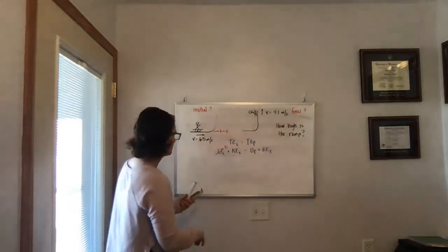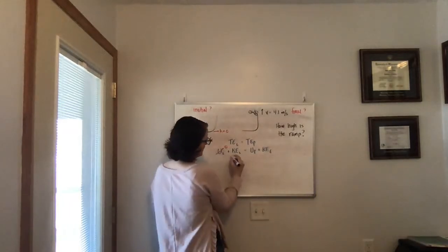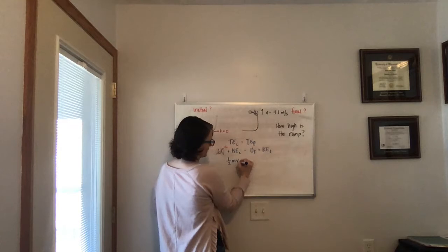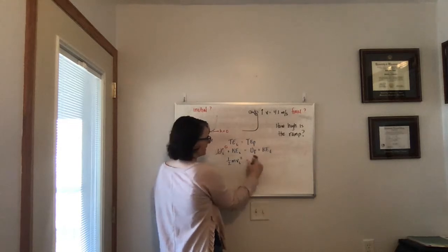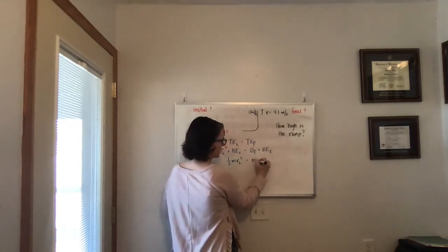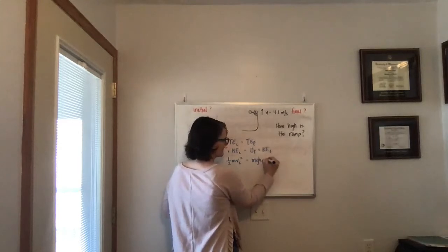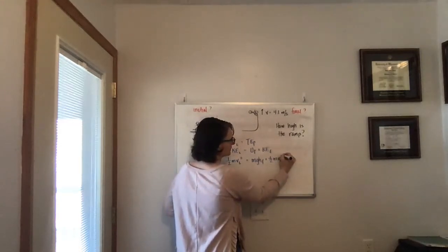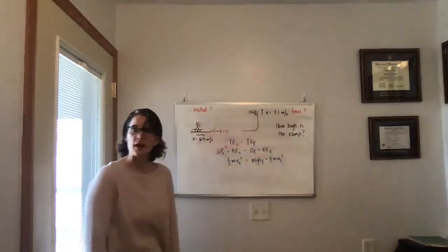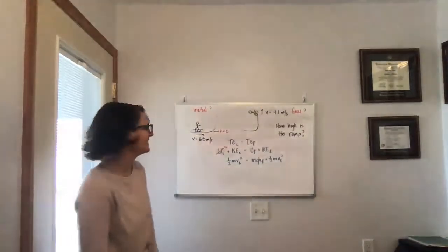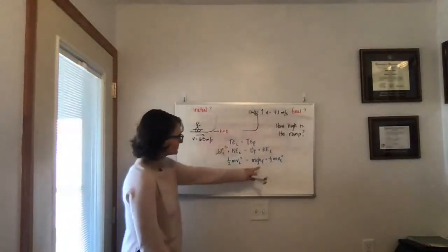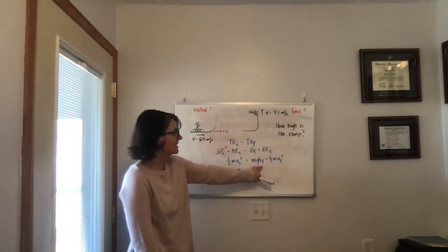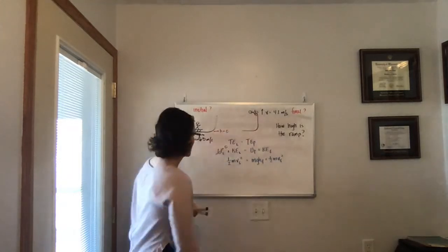Alright, so we are left with the initial kinetic one half the mass times her initial speed squared is going to equal our final potential mass times g times the final height plus our final kinetic one half mass times the final speed squared. And now it just becomes a matter of using the information that was provided in the problem. We're interested in this final height, how high is that ramp, so when she leaves the ramp.